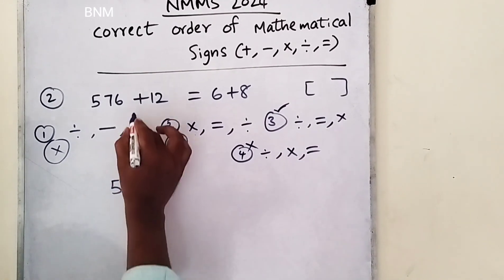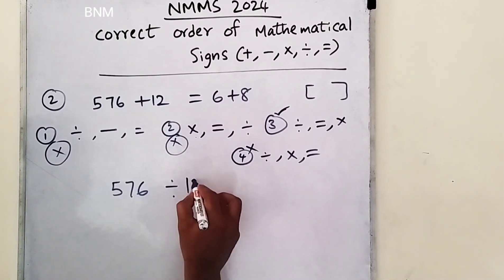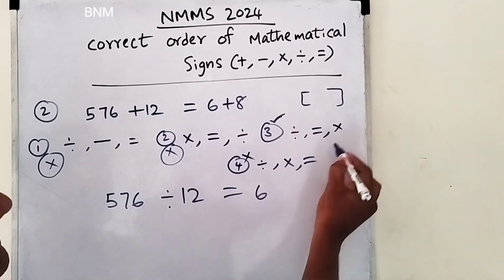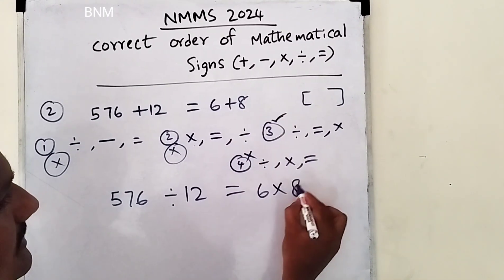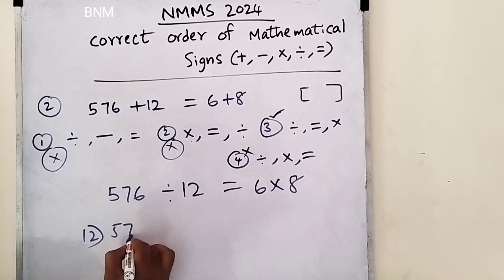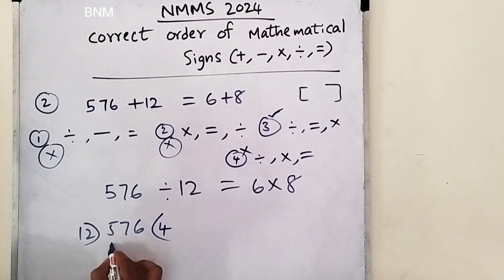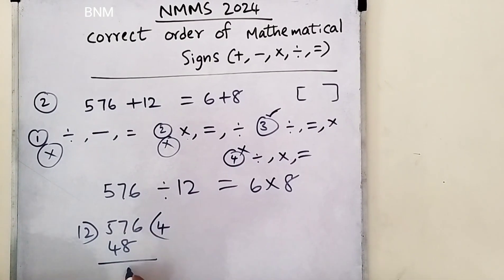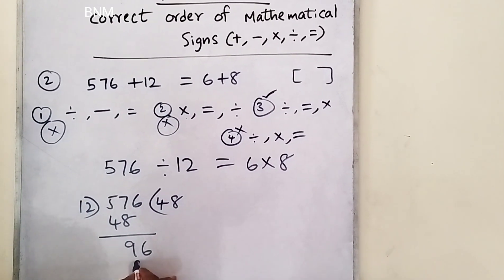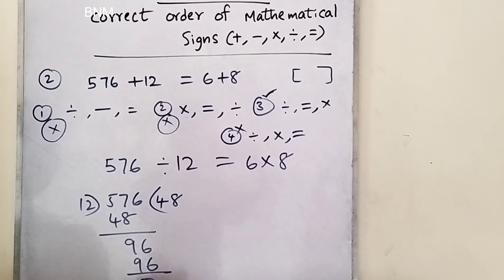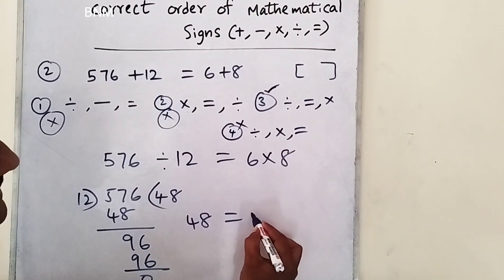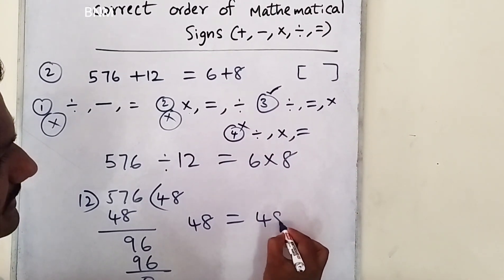Let's check: 576 division 12 equals next 6 into 8 division. 576 divided by 12 is 48. And 6 into 8 is 48. So 48 equals 48.